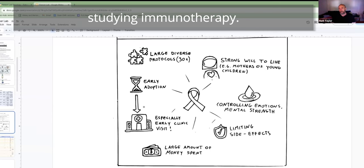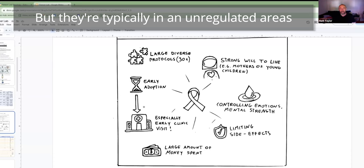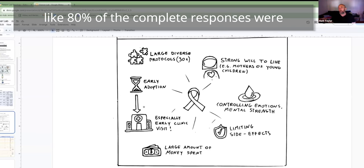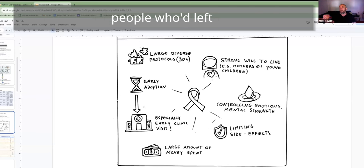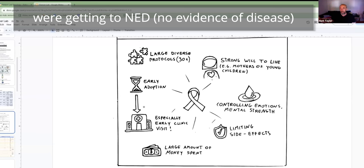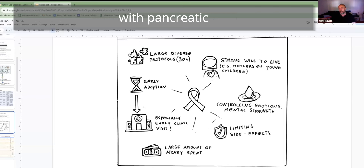They're typically in unregulated areas where people would need to fly to and spend a fair amount of time. But if they did it early, we were seeing like 80% of the complete responses were people who had left in their first line or prior to their first line of treatment, and were getting to NED with pancreatic, which is incredibly rare.